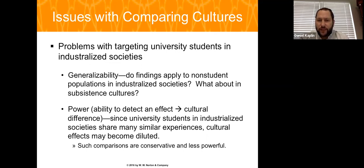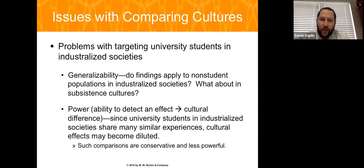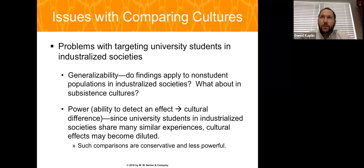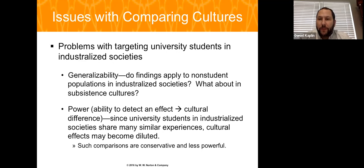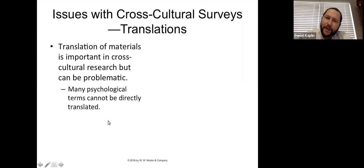A second issue is statistical power — the ability to detect a real effect. We might find meaningful statistical power in college student samples, but when we apply findings to the general population, it becomes weaker. Comparing university to non-university students, the ability to detect a real effect drops considerably, and that is one of the major concerns.